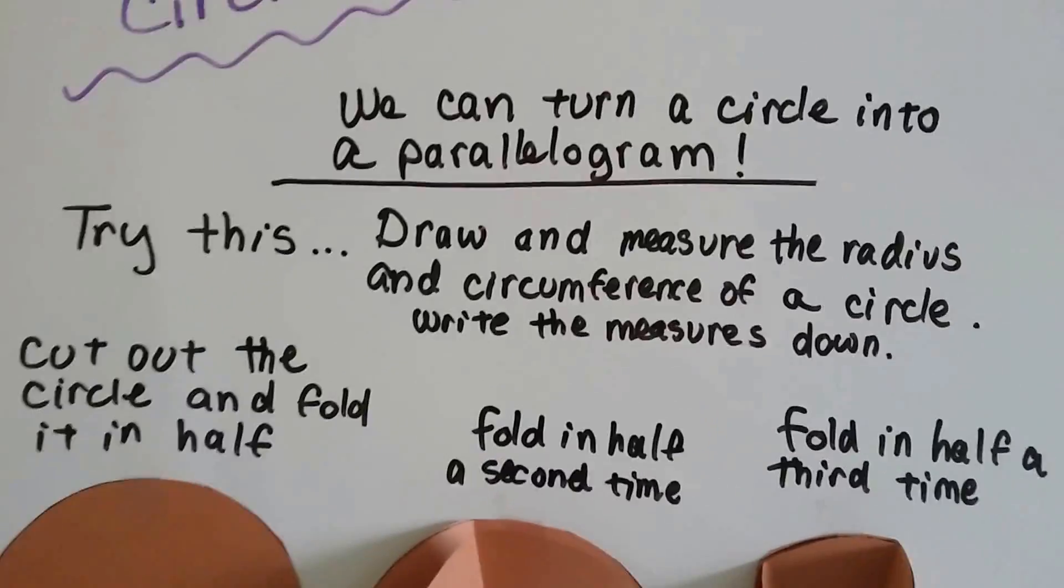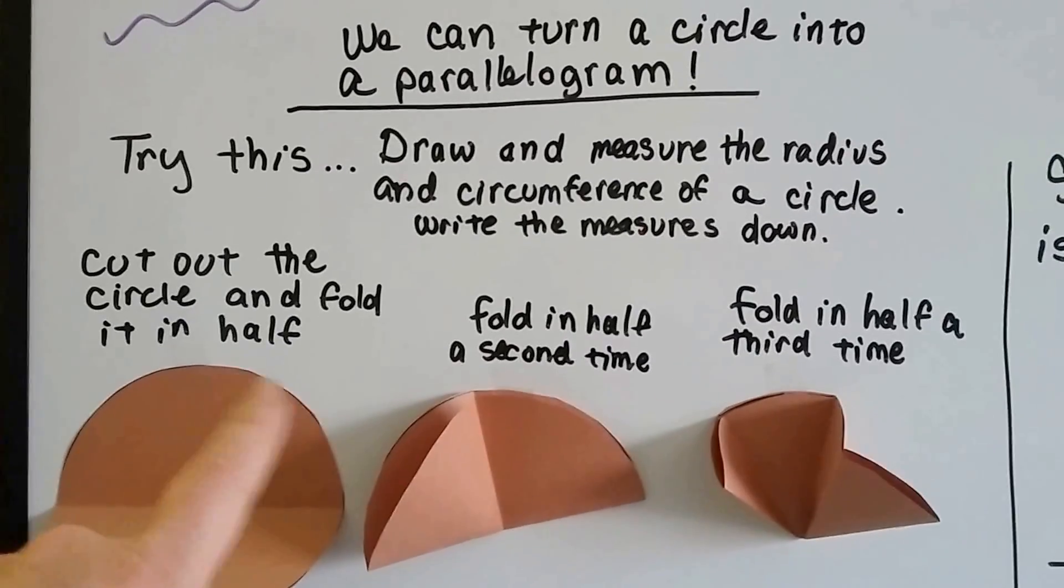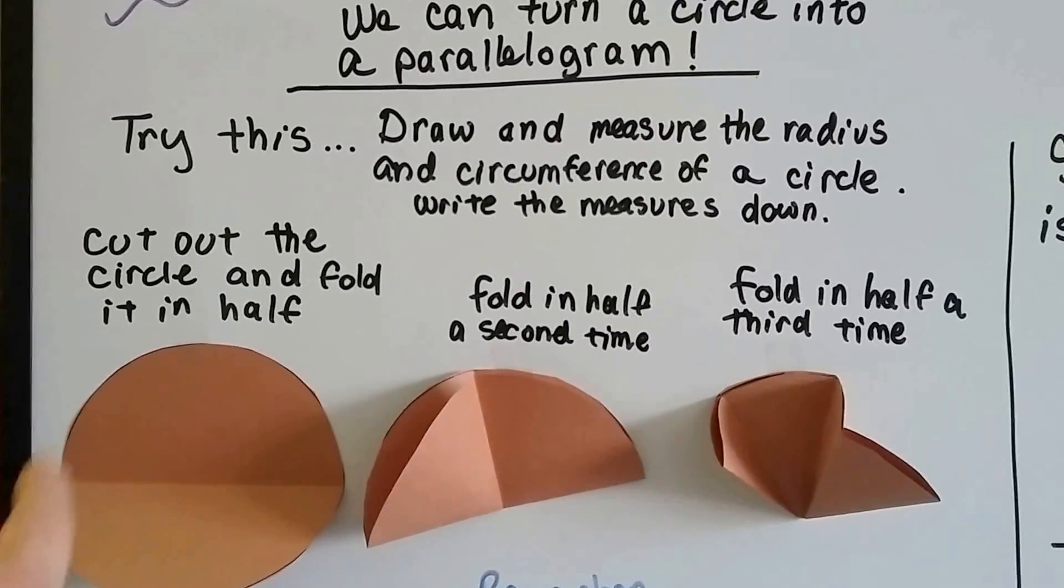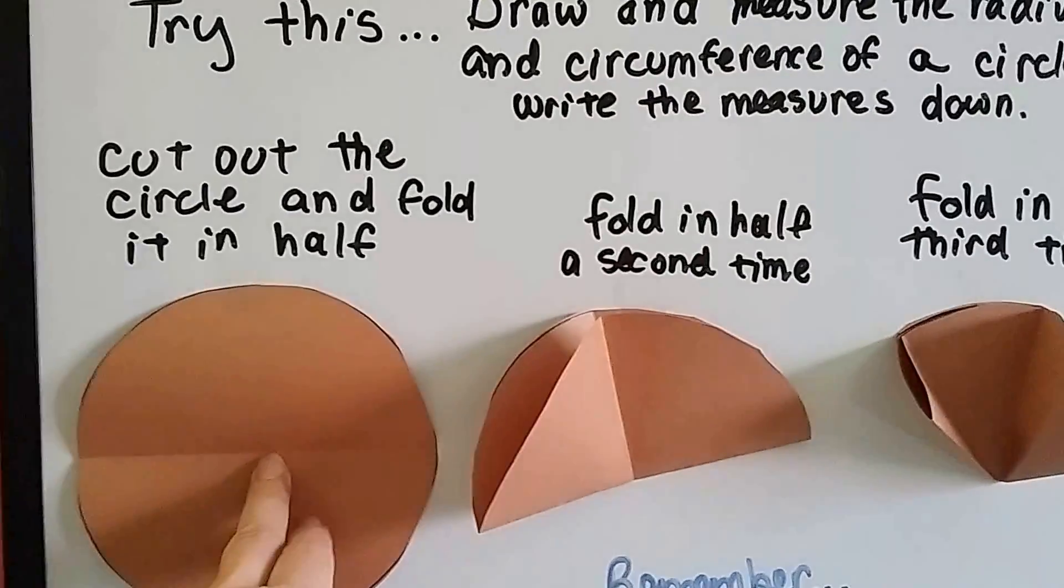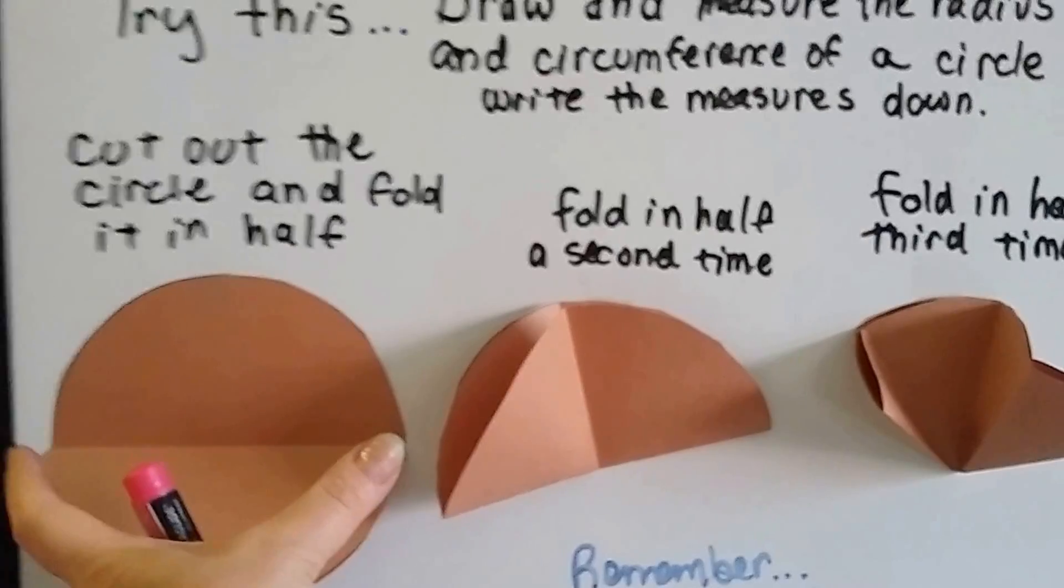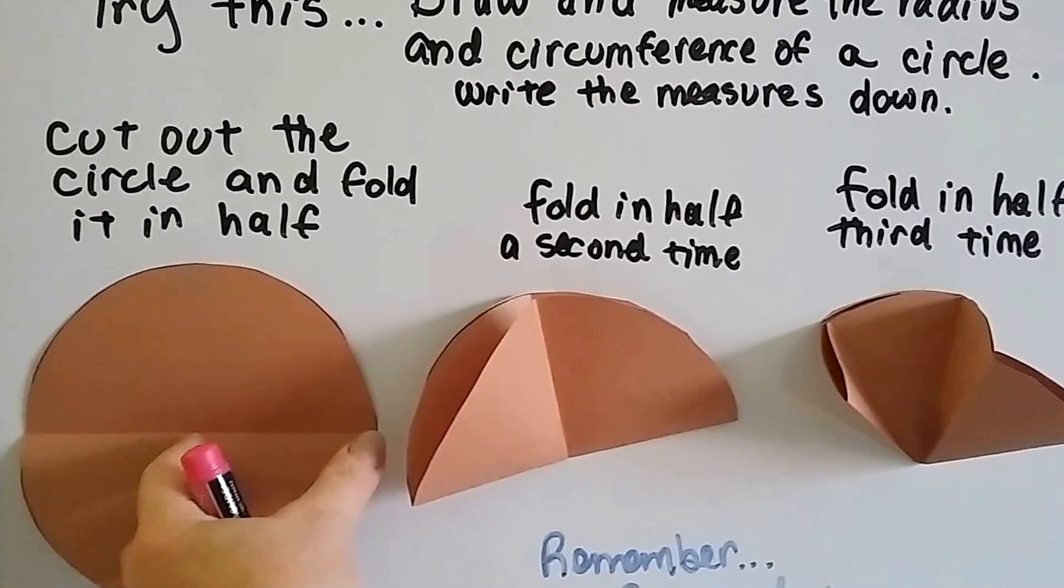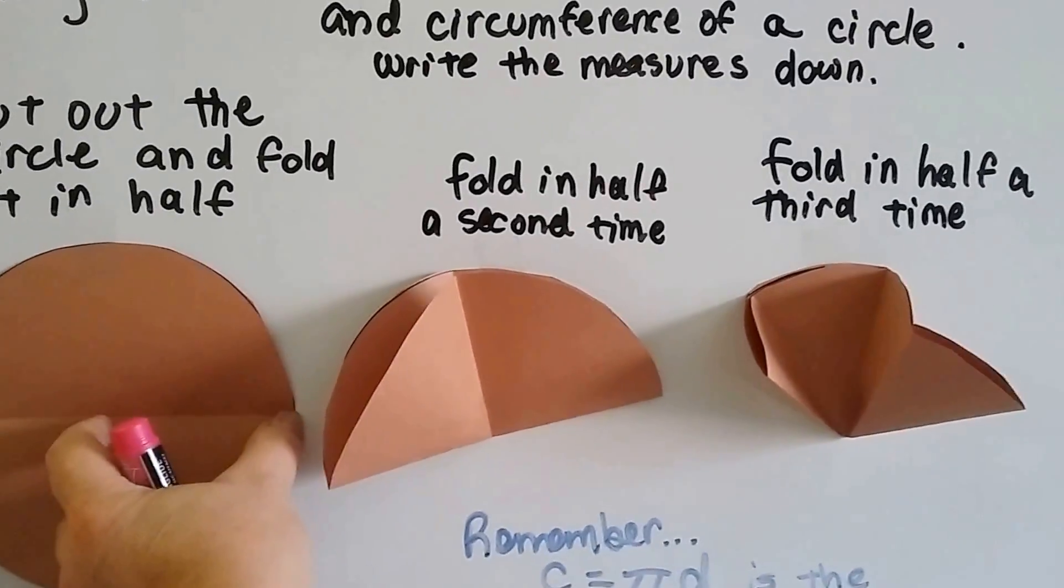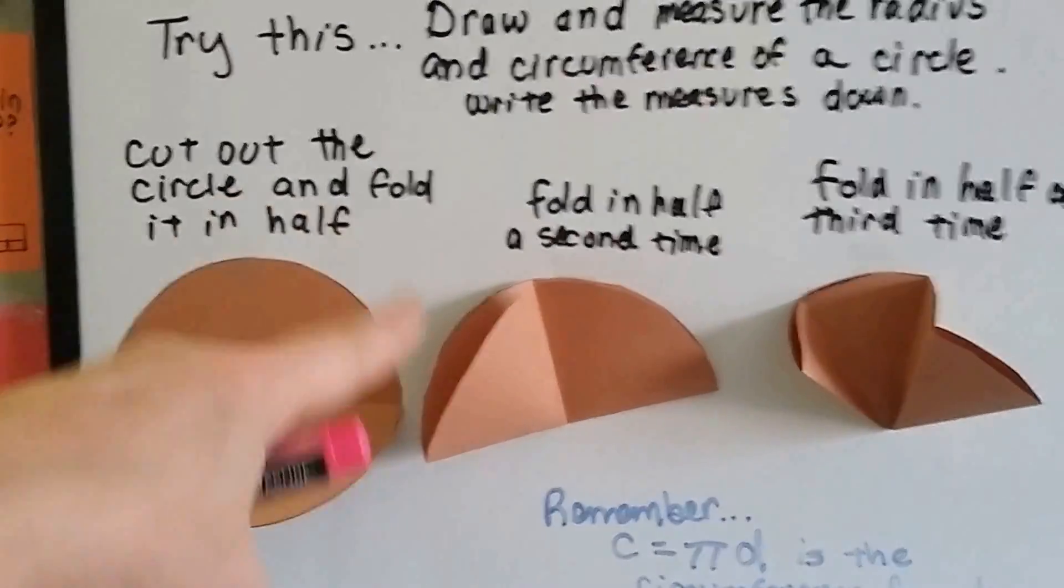So if you want to try this, go right ahead because it's kind of fun. Draw and measure a circle. Measure the radius from the very center to here. Remember the radius is half the diameter. The whole side to side is the diameter and from the center to the edge is the radius. So measure the radius, this part.